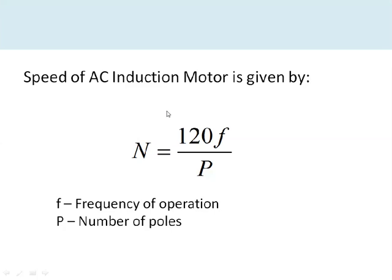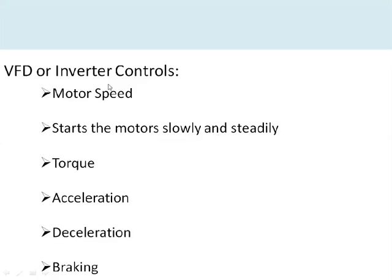The speed of an AC induction motor is given by N = 120f / P, where f is the operating frequency and P is the number of poles. Since the number of poles is fixed for a particular motor, in order to vary the speed of the induction motor, the frequency needs to be varied. This is done using the Variable Frequency Drive, also known as an inverter.